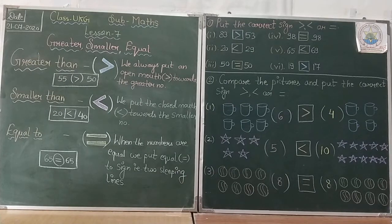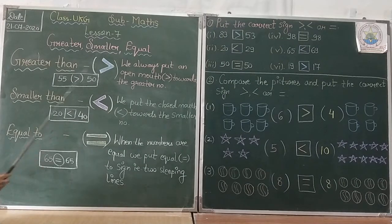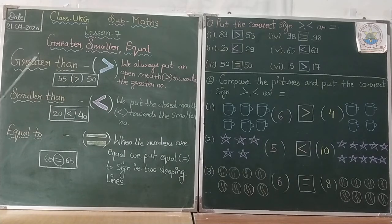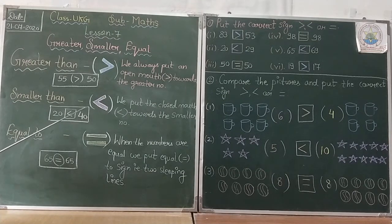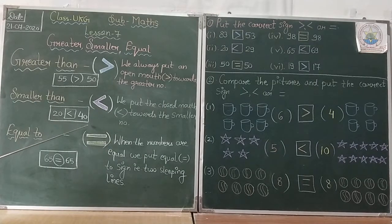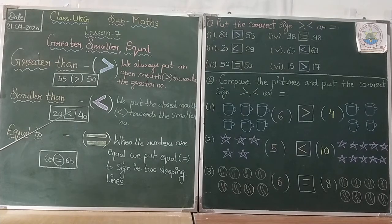Next is smaller than. Smaller means چھوٹا. We put the closed mouth towards the smaller number. جو smaller number ہوتا ہے، اس میں ہم sign کا اُلٹا کر دیتے ہیں — جو mouth جس side اس کا بند ہوتا ہے۔ Example: 20 لکھا ہوا ہے اور 40 لکھا ہوا ہے۔ So, 20 is smaller than 40. تو یہاں پر ہم یہ والا sign put کریں گے۔